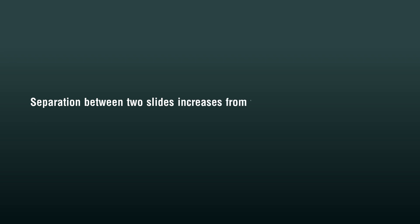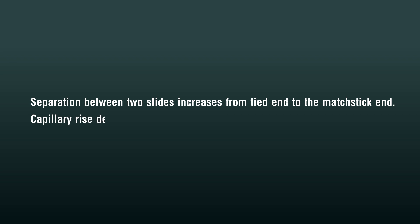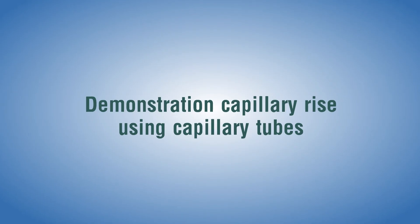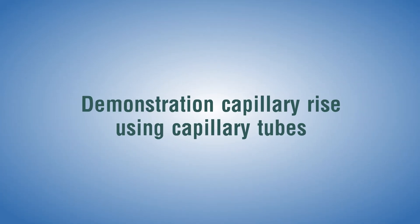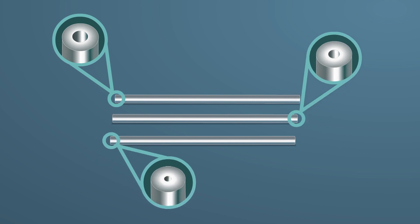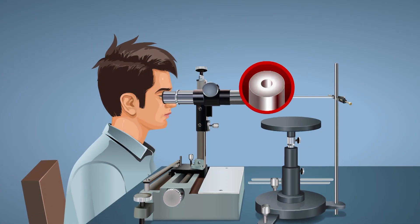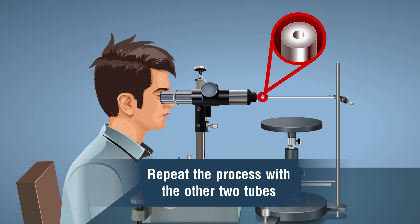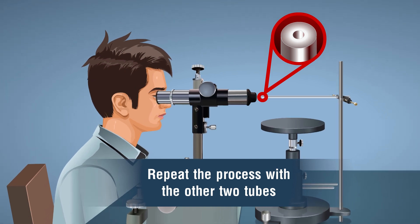Observe what happens. Observation: separation between the two slides increases from the tied end to the matchstick end. Capillary rise decreases as separation between slides increases. Next demonstration: capillary rise using capillary tubes. Take capillary tubes of different radius and same length, and find the radius of capillary tubes using a traveling microscope.